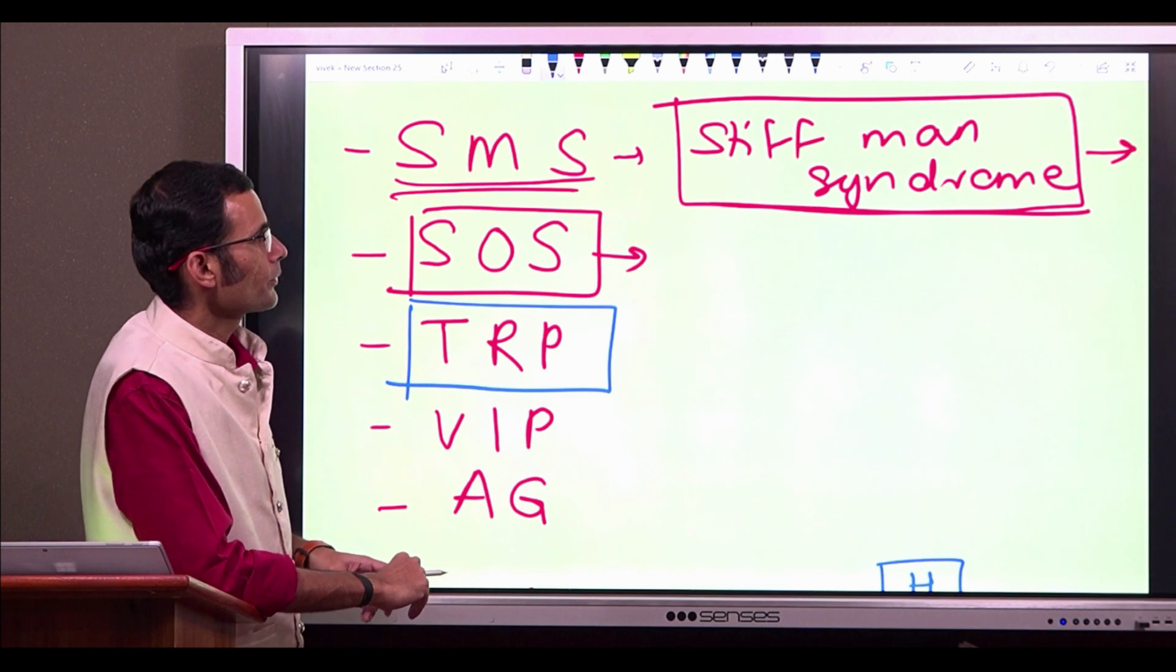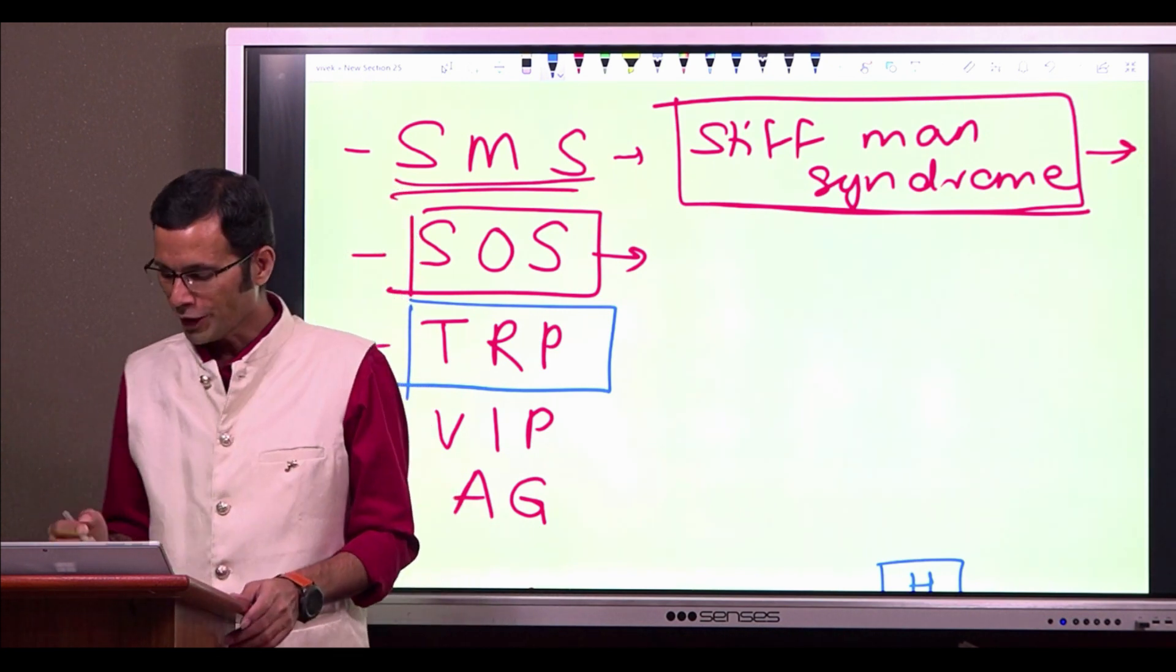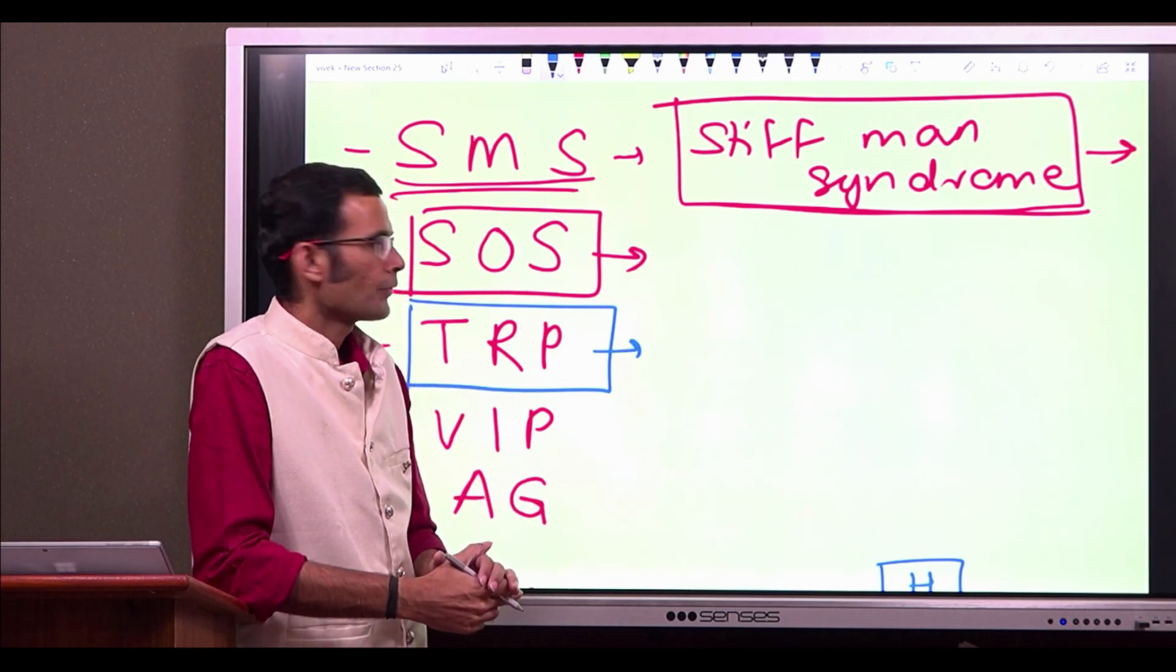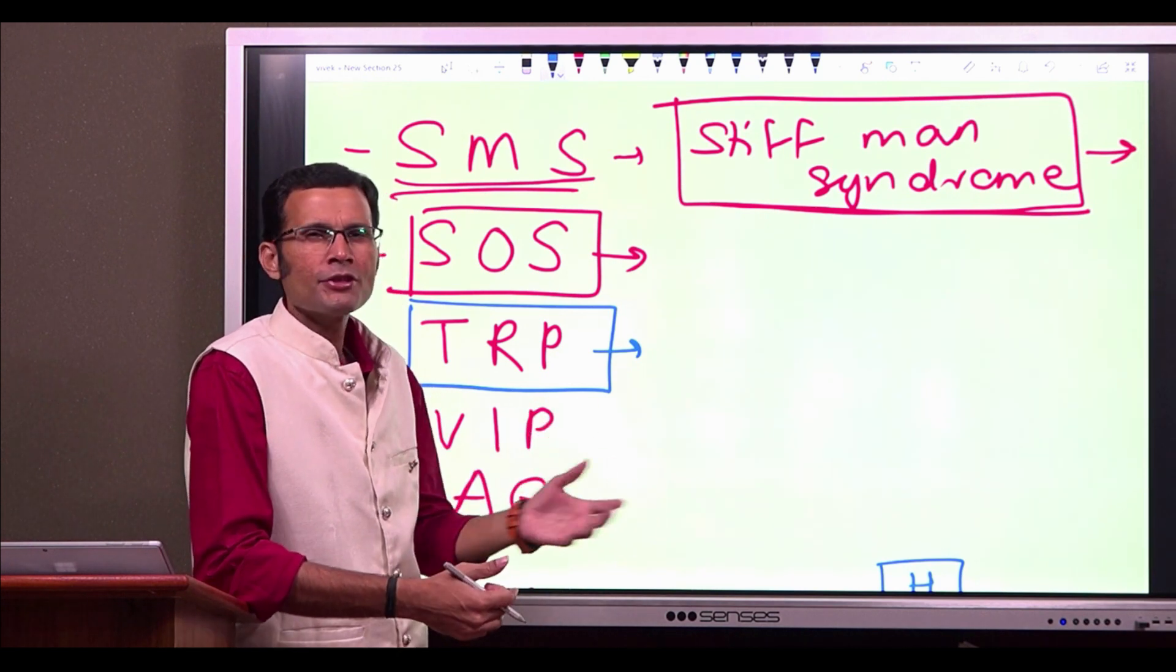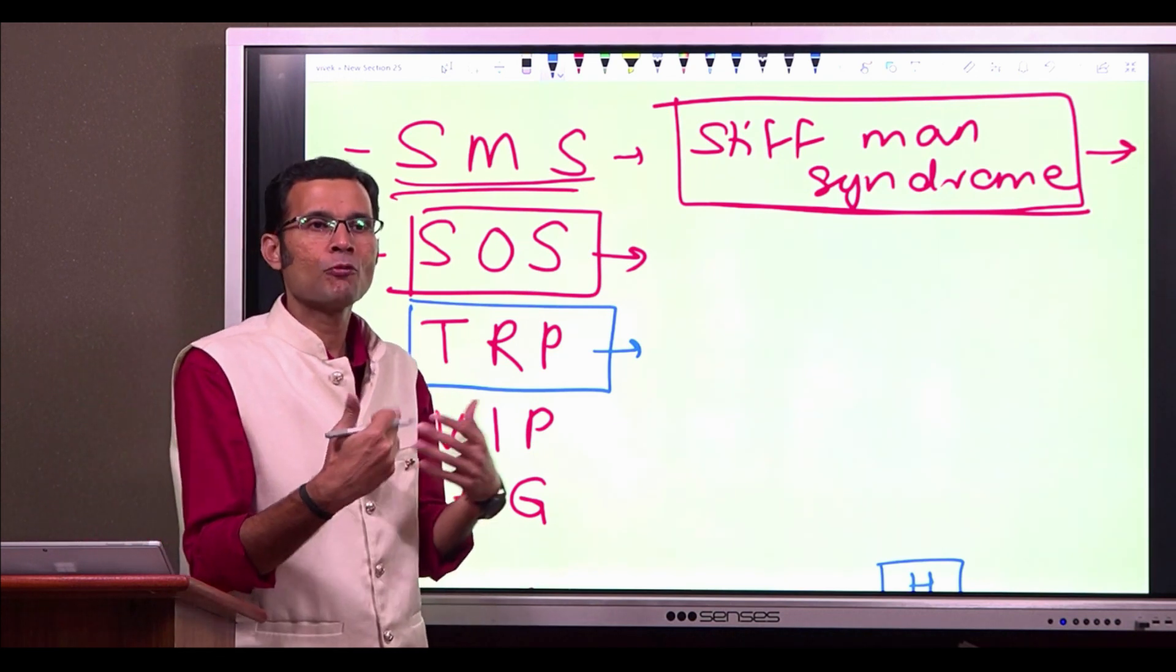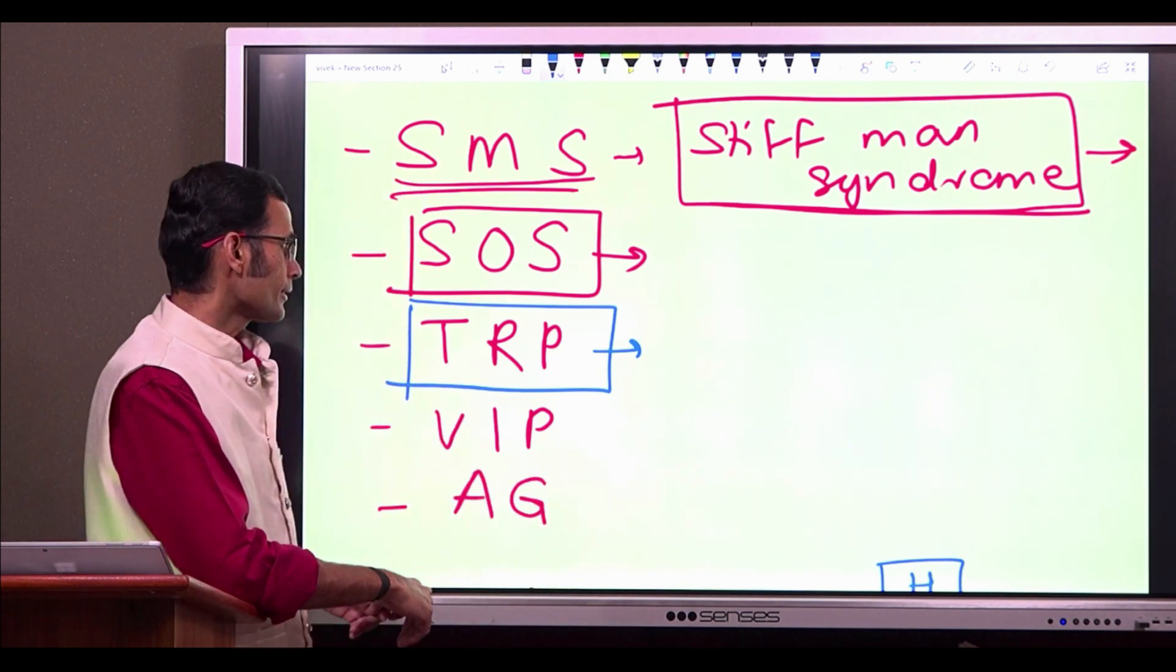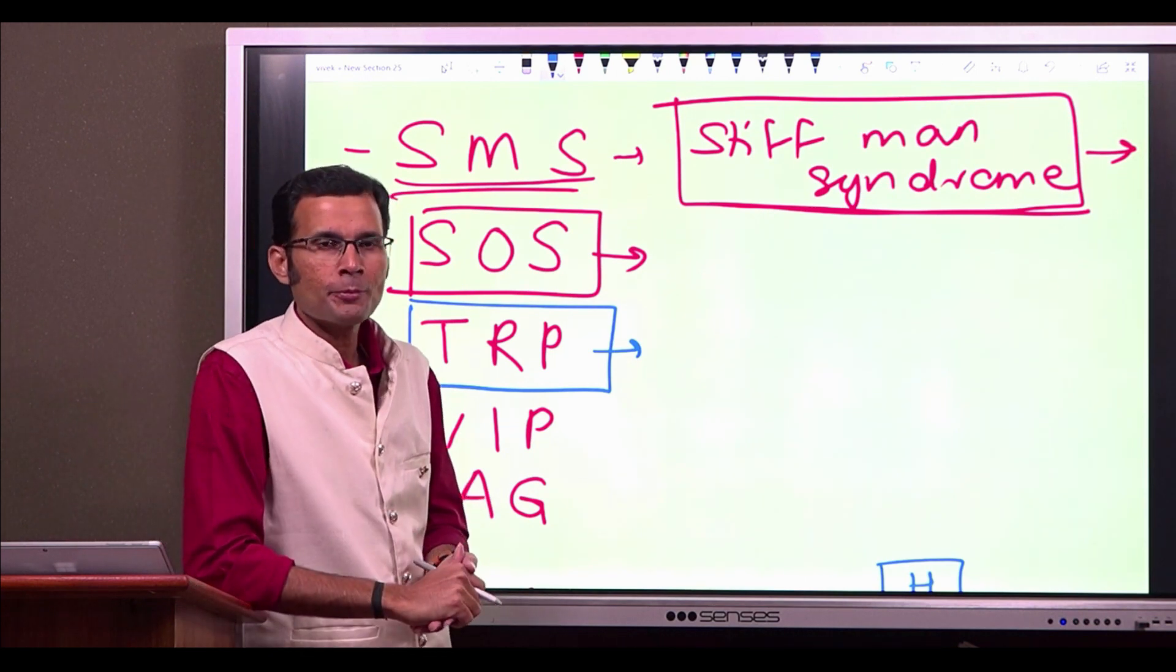So let us take one more, TRP, you got any idea? What is the normal routine life full form of TRP? It is related to the television serials, television rating points. I mean, how popular a serial is or how much watched that serial is, it is decided based on TRP ratings. So that is the normal full form of TRP.